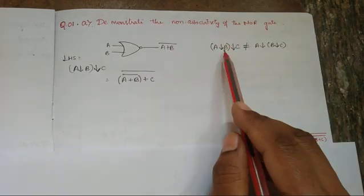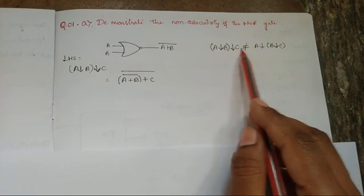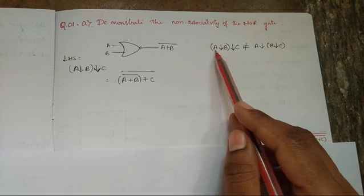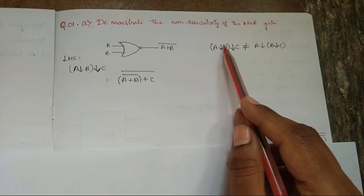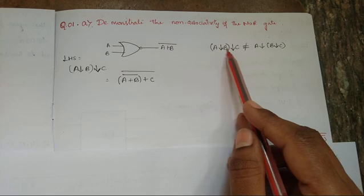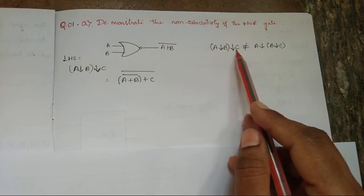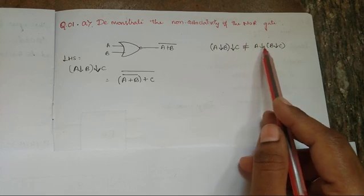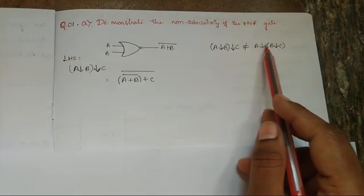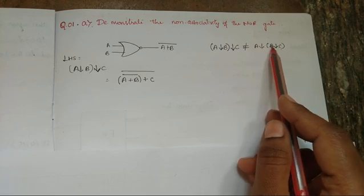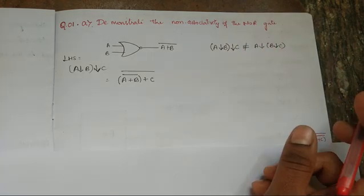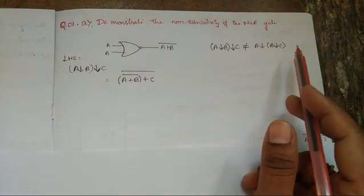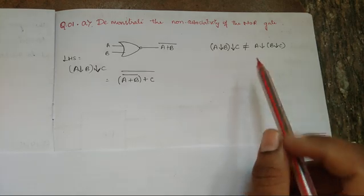They are asking us to prove non-associativity, that is these two equations are not equal: A NOR (B NOR C) is not equal to (A NOR B) NOR C. We can demonstrate this using two methods.